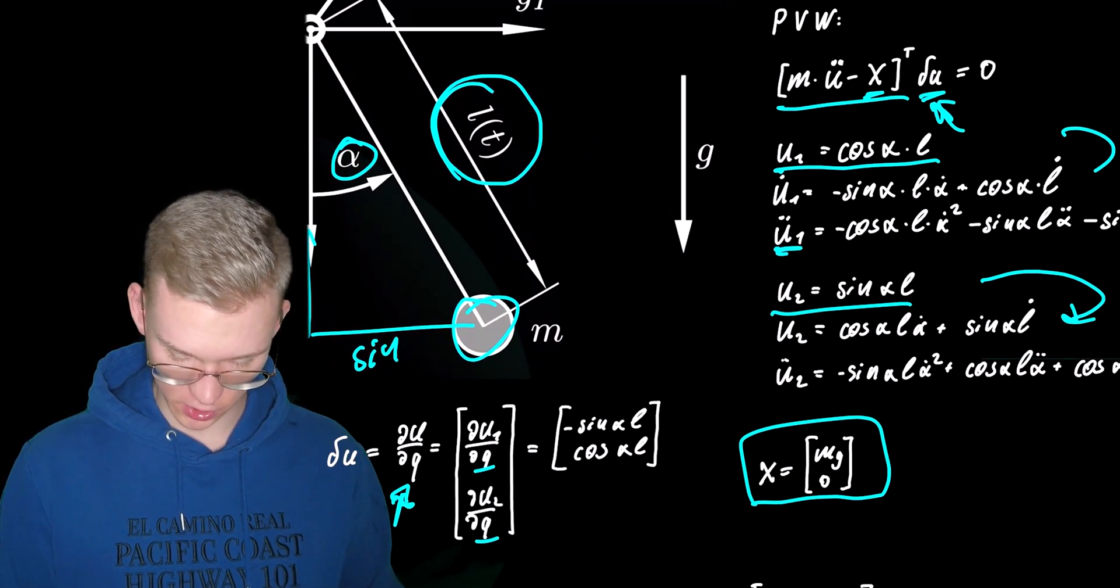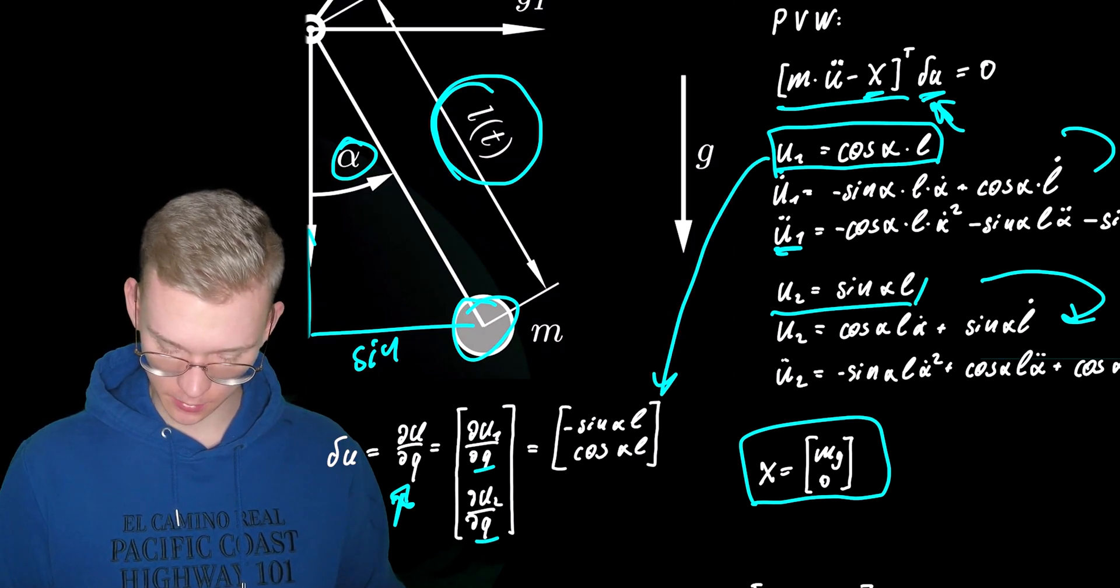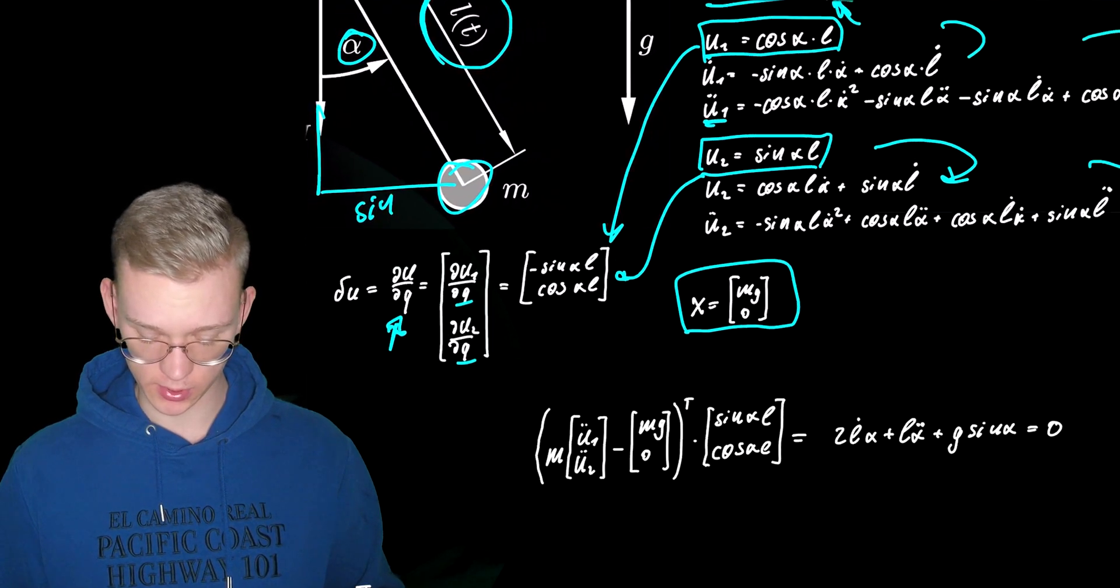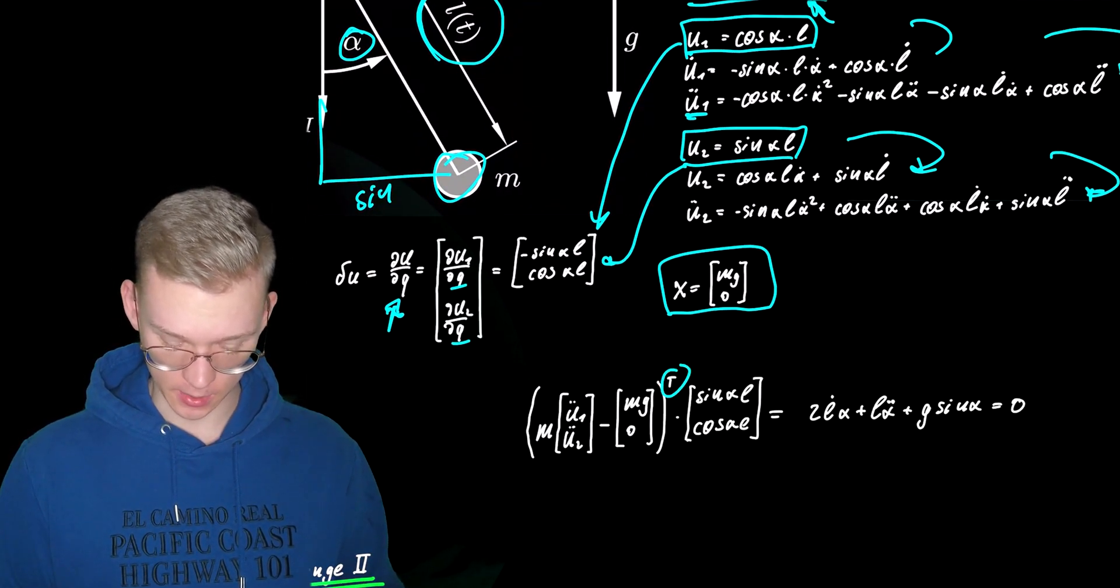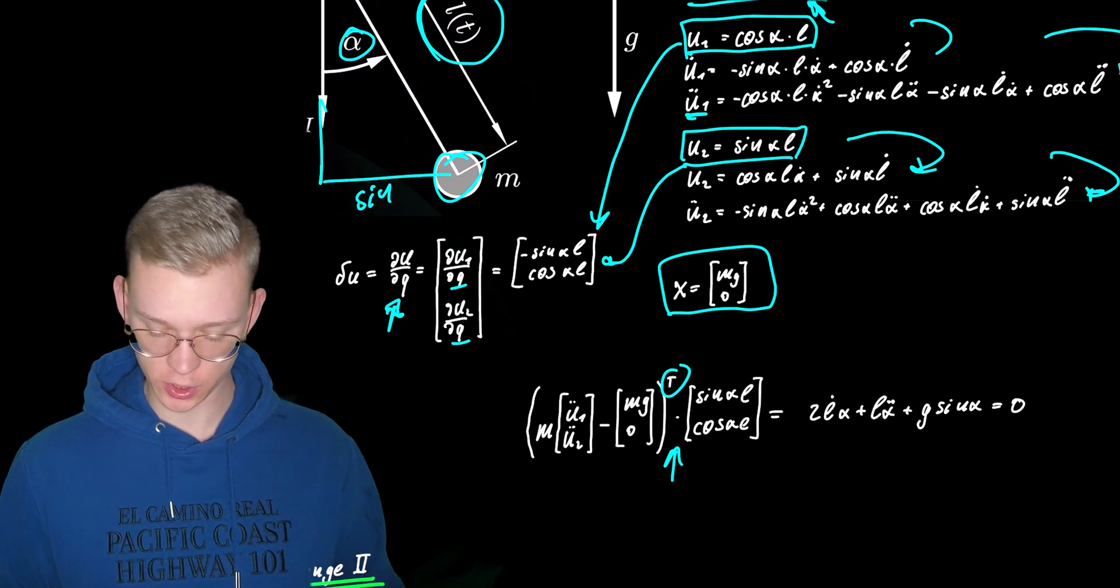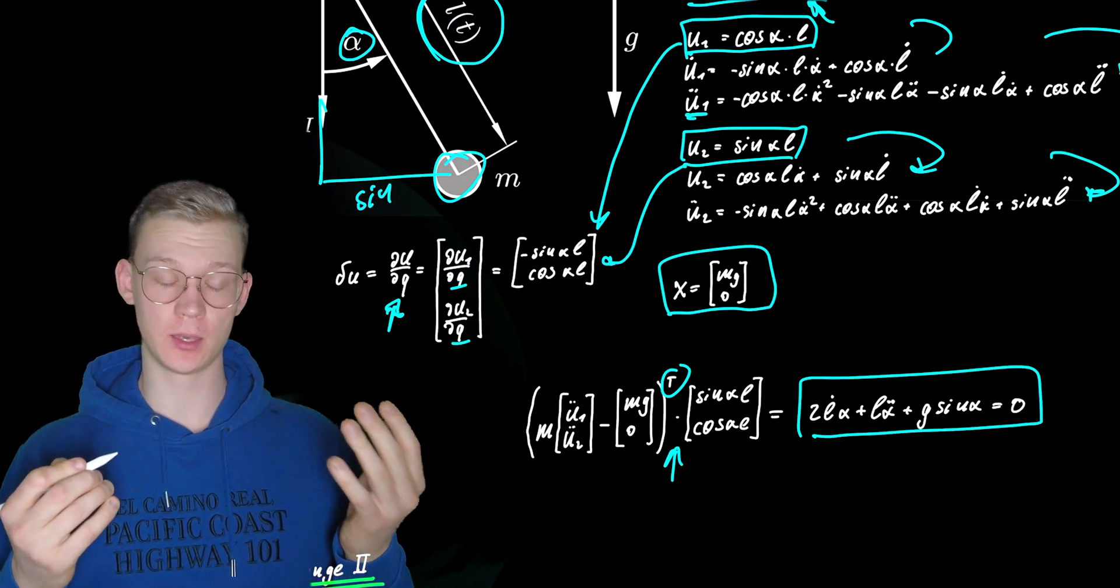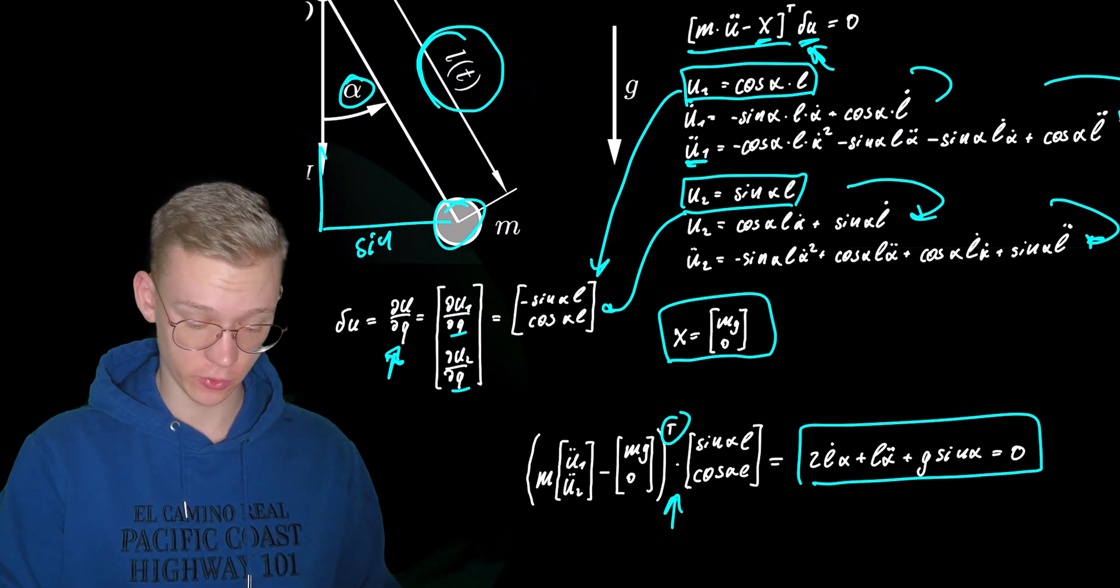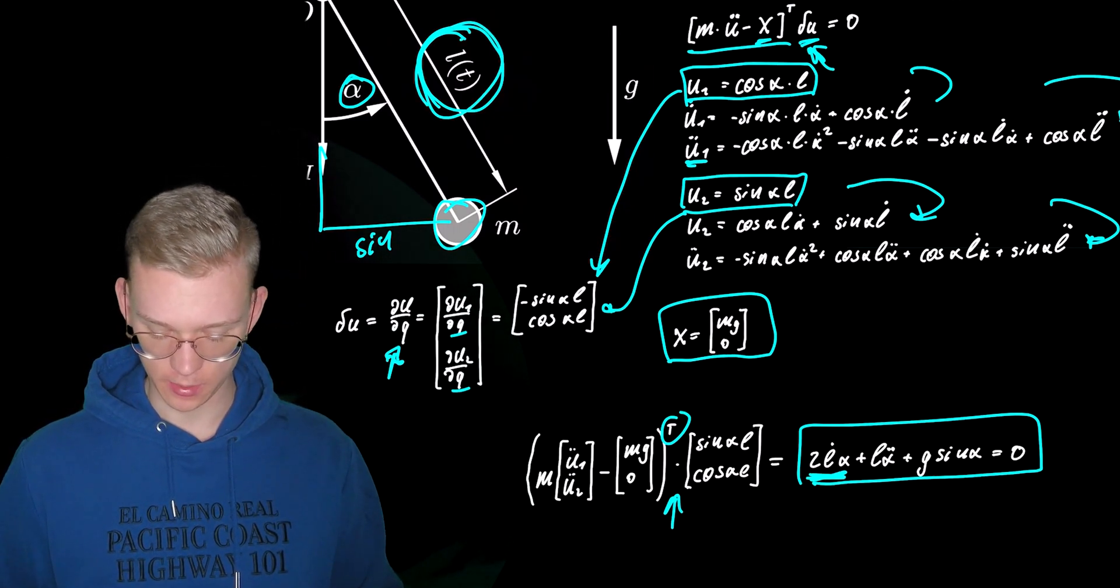So we have to derive position one with alpha and position two with alpha. And then we have to do just a simple transposition and a scalar multiplication to get the equation of motion that does not look like the equation of motion for a simple pendulum because now we have to consider the change of l. So that's where we have this addition.